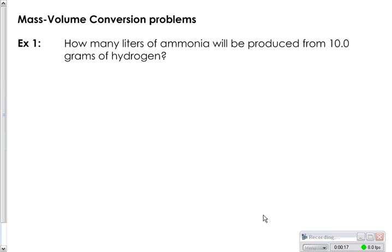The reason we know it's a mass-volume problem is because if you look at what is given, the label is 10 grams, which is the mass part, and it's asking you to find liters, which is the volume part. As in any stoichiometry problem, the very first thing you need to do is write a balanced chemical reaction.